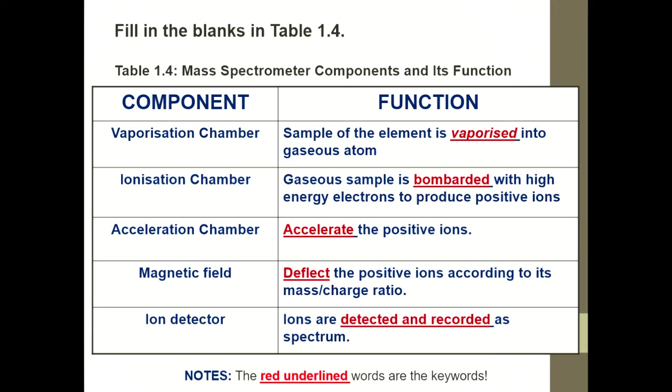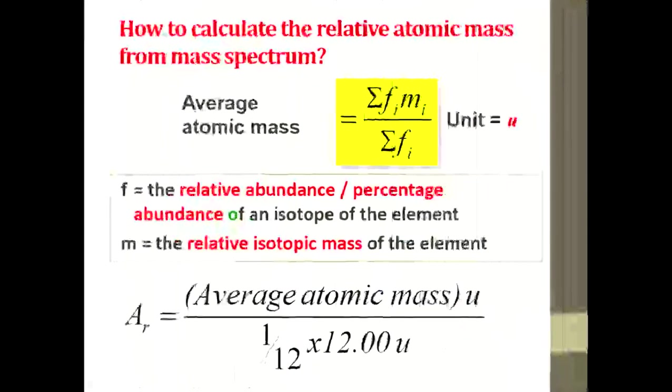The simplified version of the mass spectrometer components and its function which you can write in page 22. Beware of the red underline words because they give you points, important points in the exam.